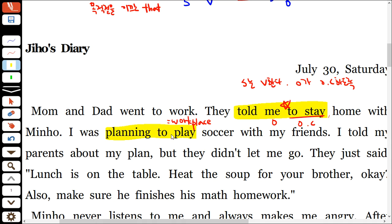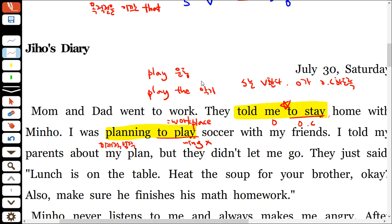to부정사를 목적어로 취하는 동사 뒷자리에 ing는 안 돼요. 그리고 play 사용에서 조심할 게 있어요. 운동을 할 때는 관사가 없어요. 악기를 연주할 때는 the가 있어요. 운동은 몸만으로도 할 수 있어서 the가 필요 없고, 악기는 반드시 그 악기가 있어야 하기 때문에 the가 필요해요. 작문할 때 사이에 아무것도 안 쓰도록 조심하세요.